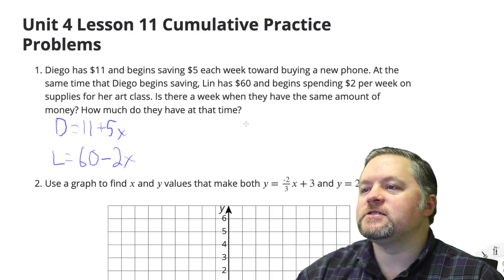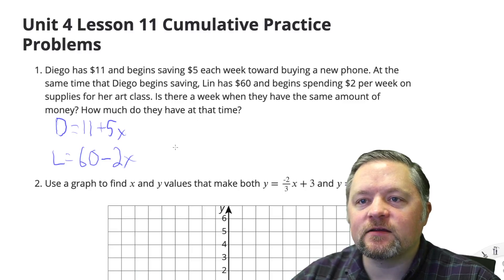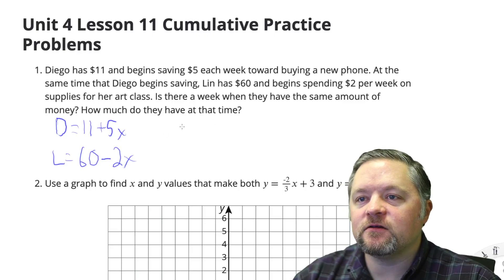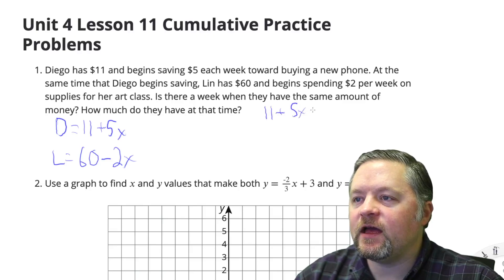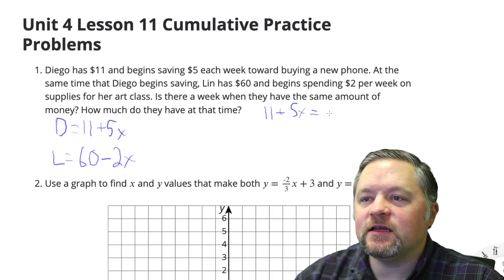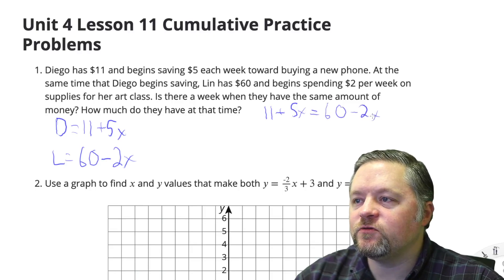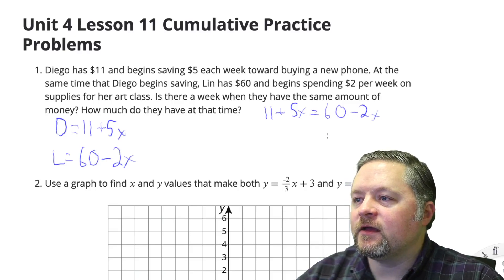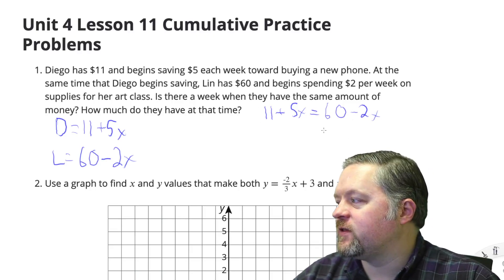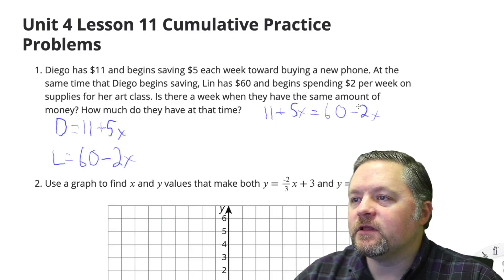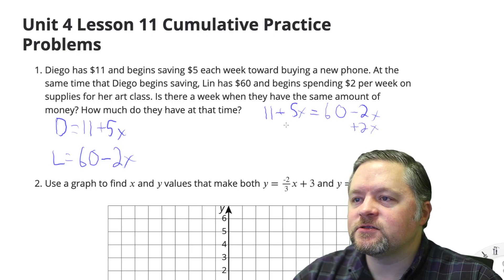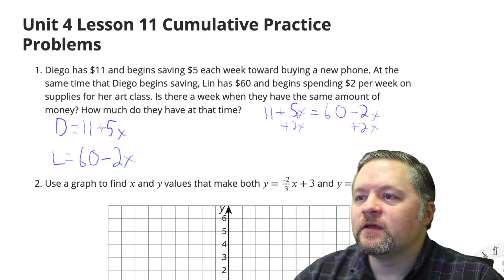So we want to figure out where they both have the same amount. Diego's total is 11 plus 5x, and Lynn's total is 60 minus 2x. We want to know when they are equal to each other, so 11 plus 5x has to equal 60 minus 2x. To solve for x, let's get all the x's on the same side by adding 2x to both sides. 5x plus 2x is 7x.